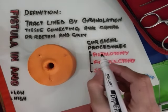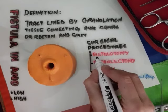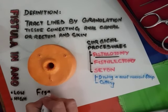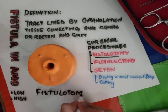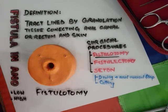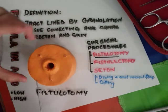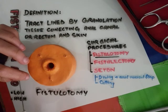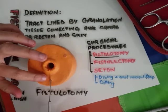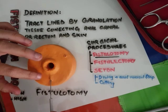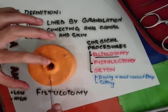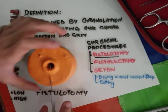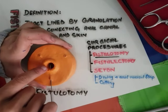Now I am going to demonstrate the first procedure, fistulotomy, in which we lay open the tract. This is performed only in low anal fistulas. What we do is pass a probe through the external opening slowly and smoothly so that we don't create a new tract. You can see the probe has been passed and it has entered the anal canal.